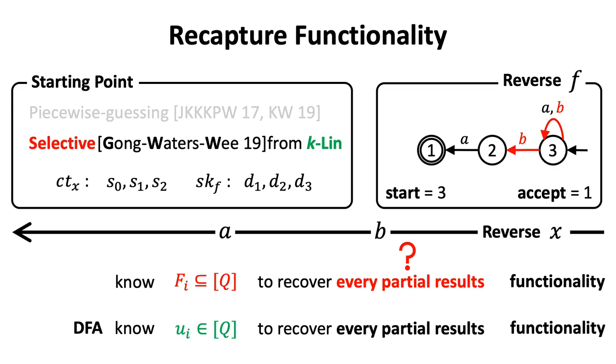Therefore, the ciphertext has three randomness, S0, S1, and S2. Each of them corresponds to each step.